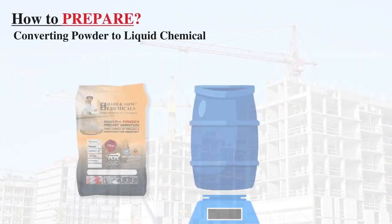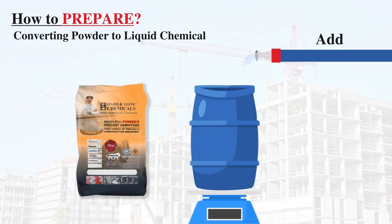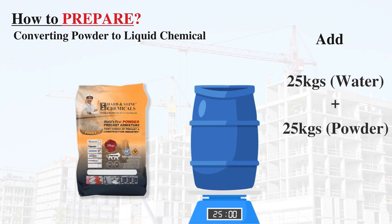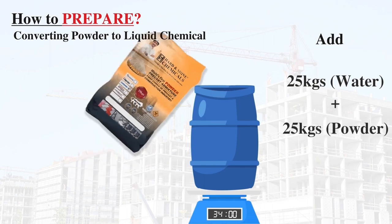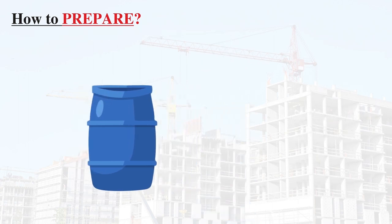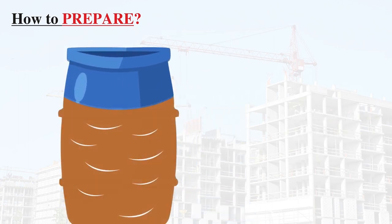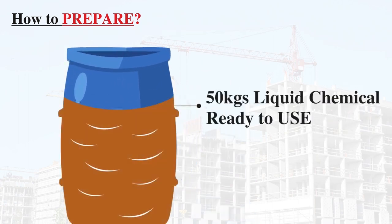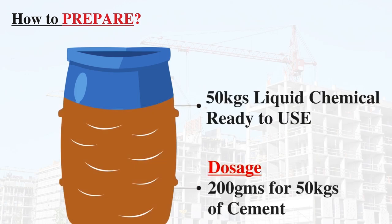How to prepare Rapidash powder into liquid: Add 25 kilograms of water and 25 kilograms of Rapidash powder into a drum and mix it using an electric stirrer or rod. 50 kilograms of Rapidash liquid chemical is ready to use. Dosage: 200 grams for 50 kilograms of cement.